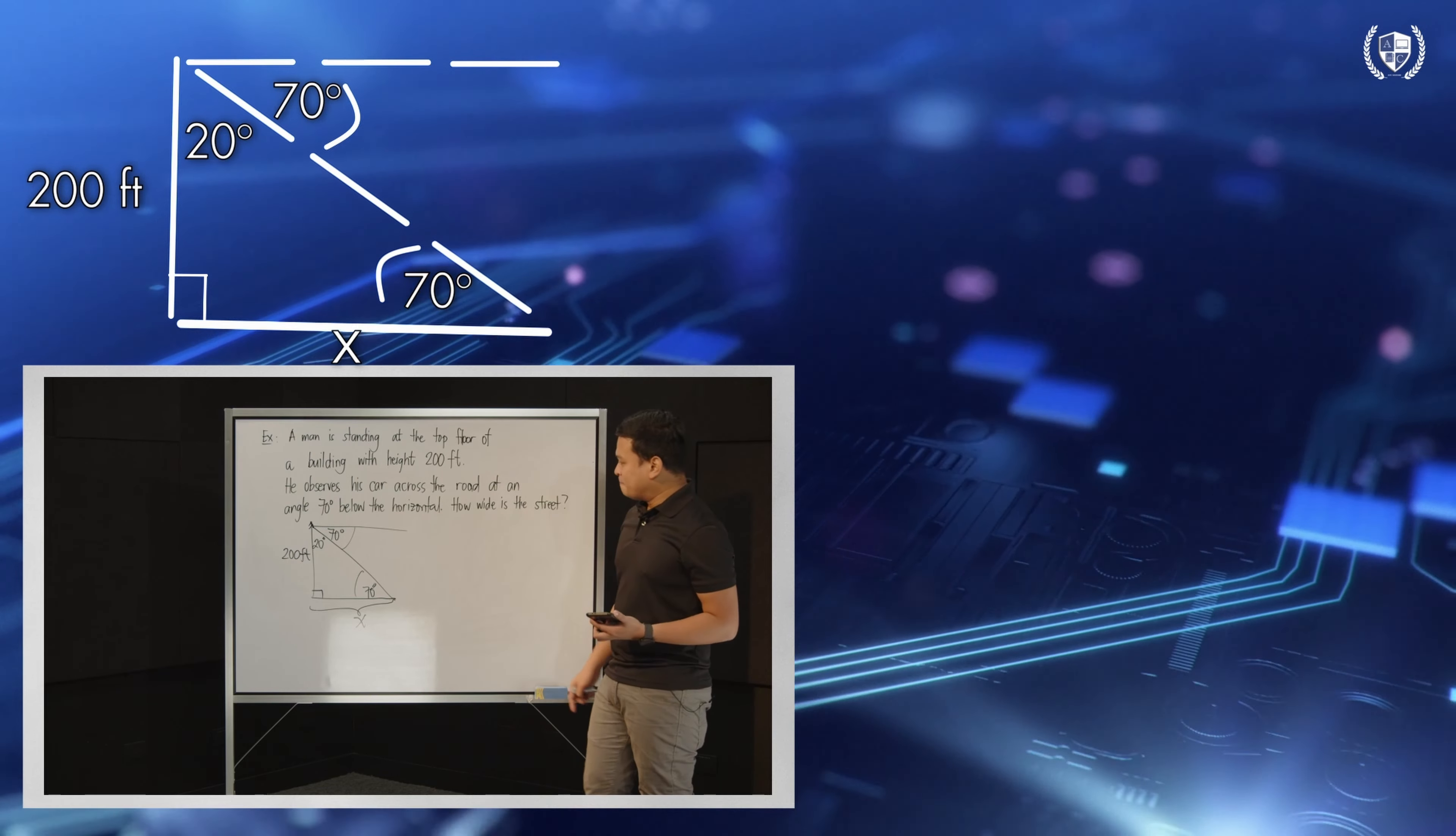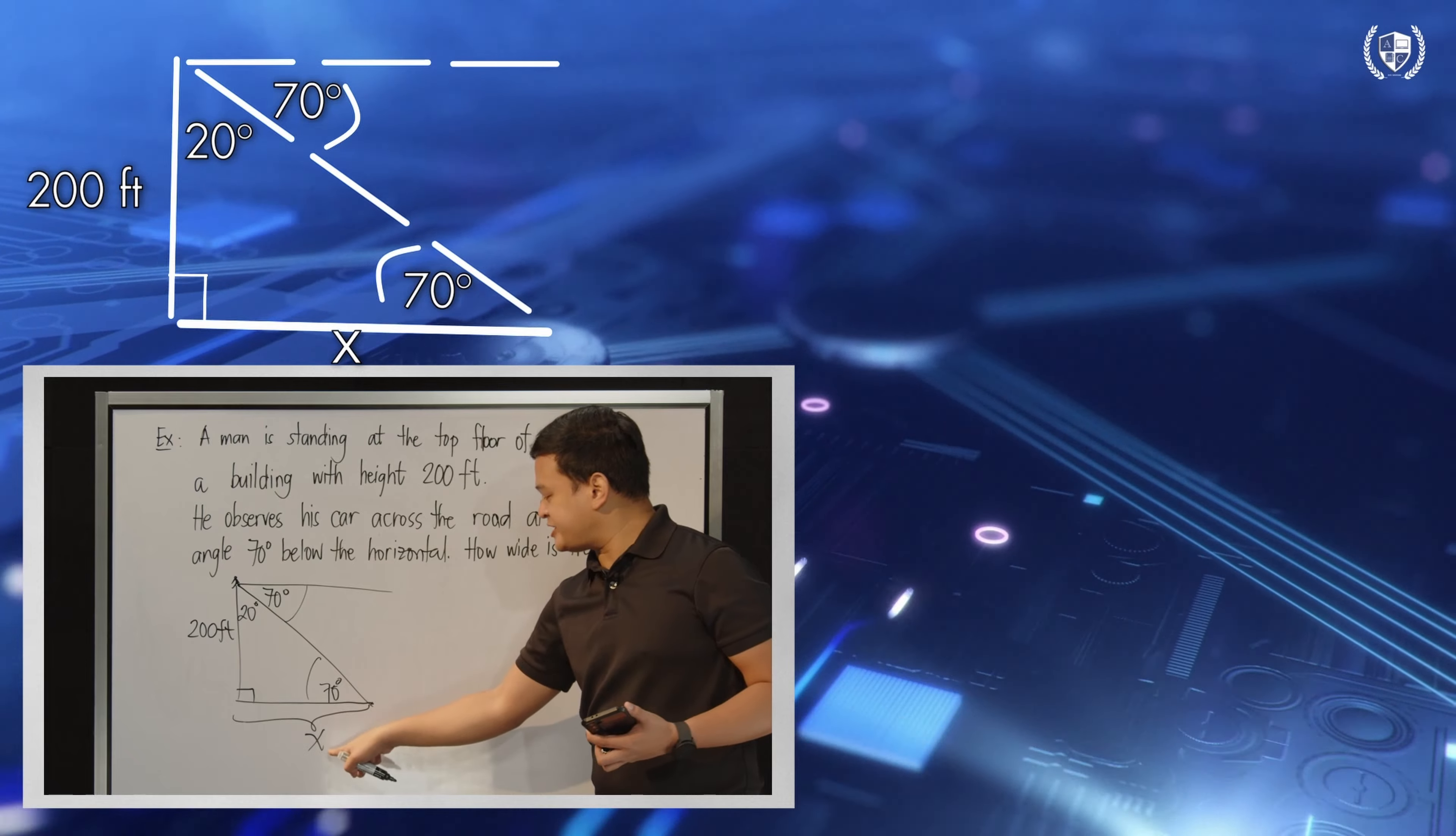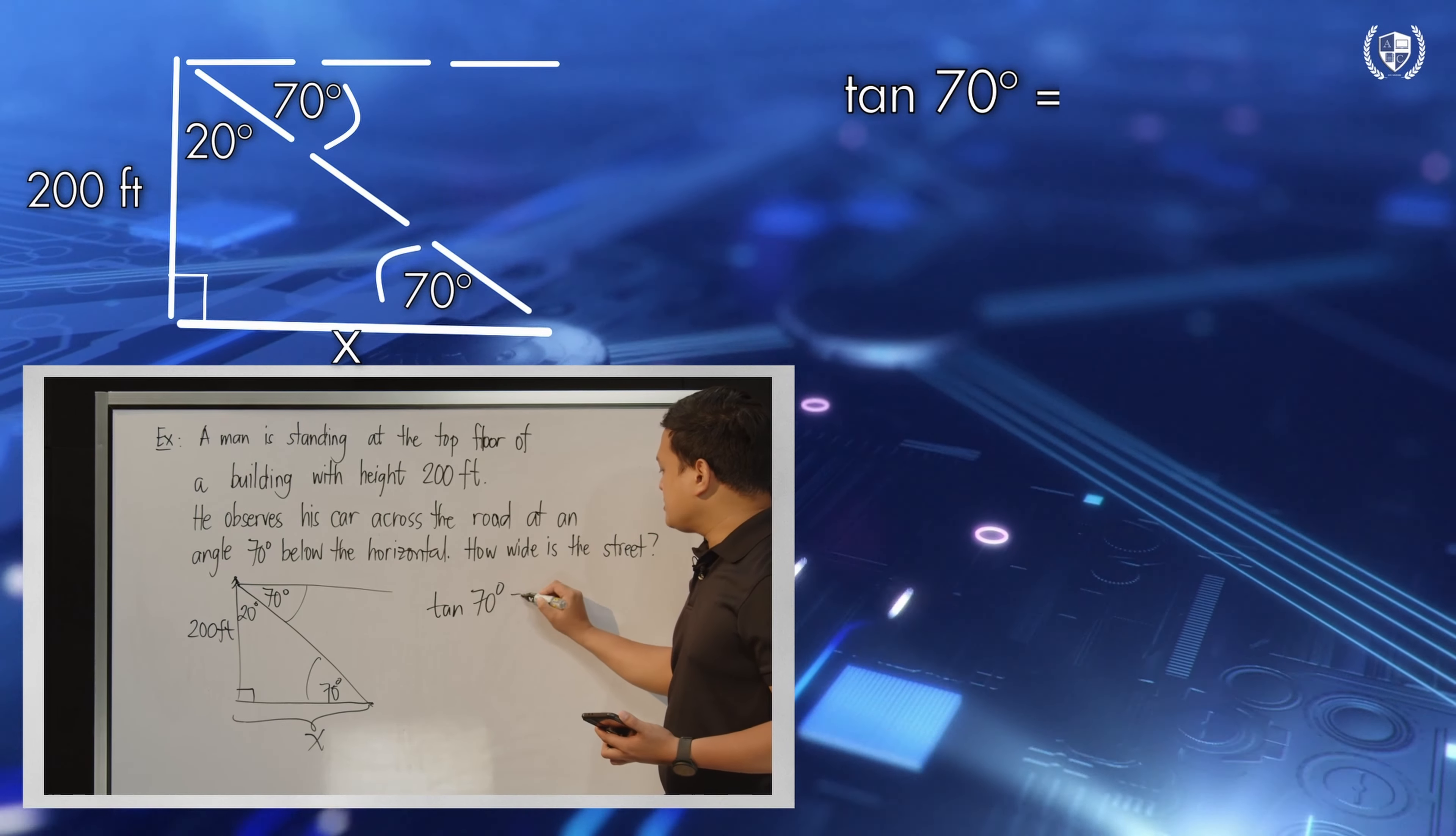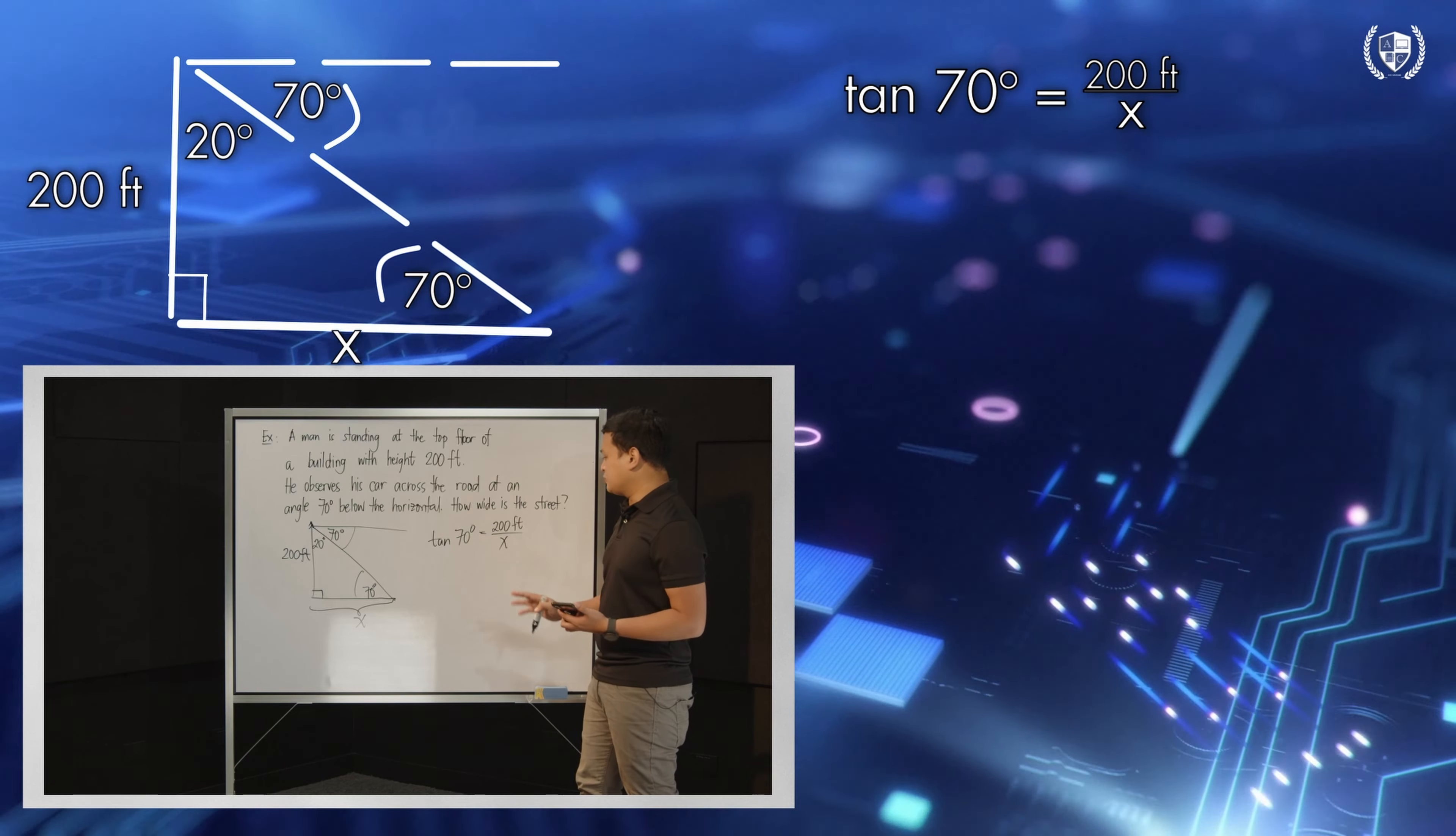So, you have 70 degrees there. Now, how do we do this? Let's use tangent. Why is tangent the best function to use? Because you have 70 degrees here. You have the opposite side which is 200 and the adjacent side which is x. So, those two are for the ratio of tangent 70 degrees. So, tangent 70 degrees equals opposite is 200, 200 feet all over x. And we can solve for x because we have one unknown and one equation.